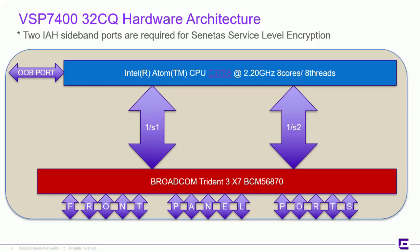Before we go further, let's look at the platform we're focusing on — the VSP 7432C hardware architecture. Two IAH sideband ports are required for the Senatus service-level encryption solution, and as you can see, we have those two sideband ports here. I want to emphasize that the performance of the encryption — the throughput profile you'll be able to generate — is directly related to the cores and the RAM associated, like any other container or virtual machine. On this platform, we've been able to get very close to the theoretical limits of the container device, and we'll talk about the specifics towards the end of the presentation.